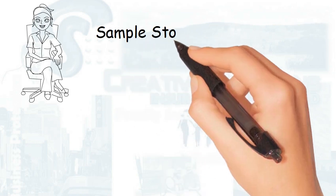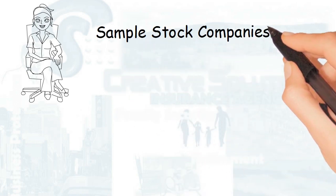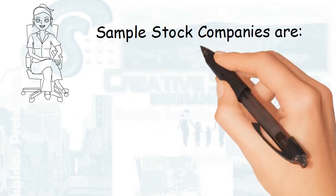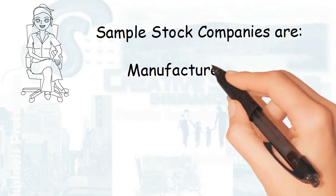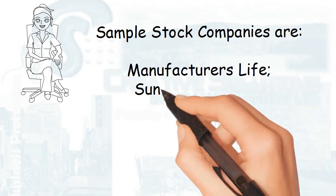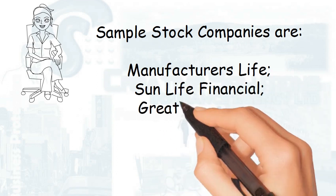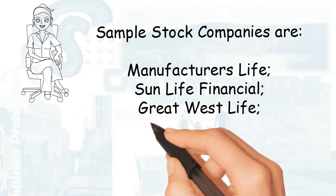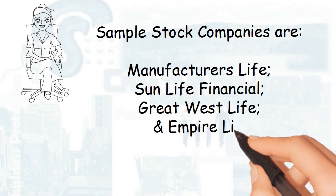Not surprisingly, most life insurance companies are stock companies. Examples of stock companies include Manufacturers Life, Sun Life Financial, Great-West Life, and Empire Life.